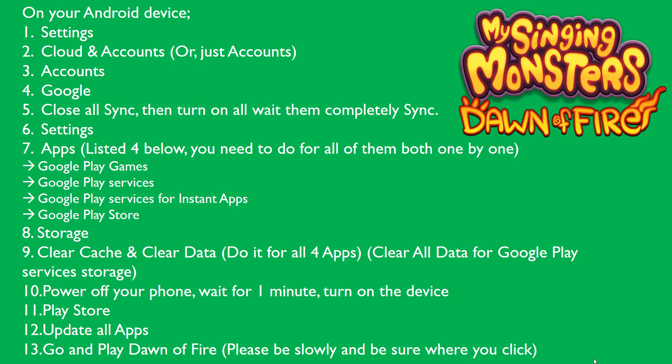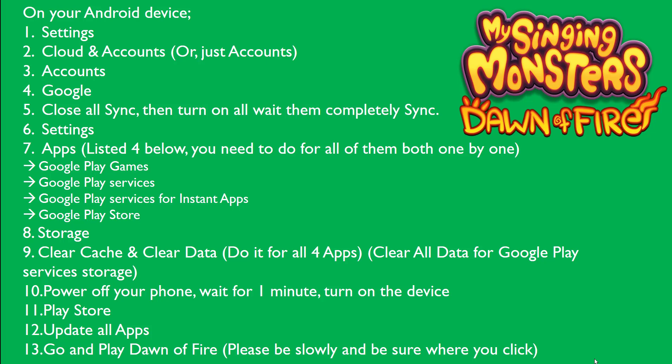Then click on Clear Cache and Clear Data. You should do this for all four apps, and don't forget to clear all data for Google Play Services storage when you're on the gray-colored page.